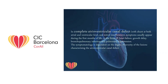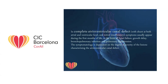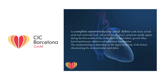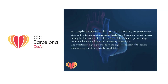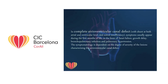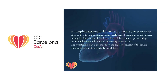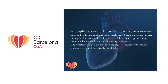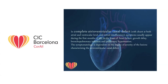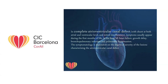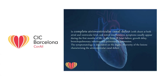In complete atrioventricular canal defect, with shunt at both atrial and ventricular level and mitral insufficiency, symptoms usually appear during the first months of life in the form of heart failure, growth delay, bronchopulmonary infection, and pulmonary hypertension. The symptomatology is dependent on the degree of severity of the lesions characterizing the atrioventricular canal defect.